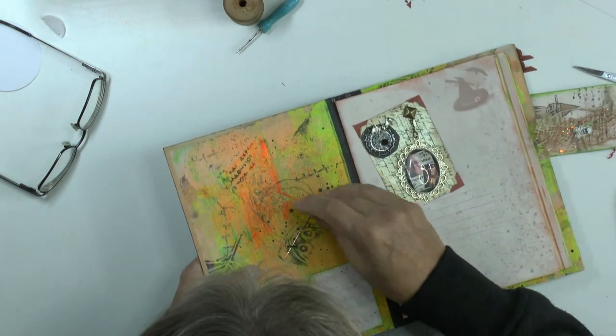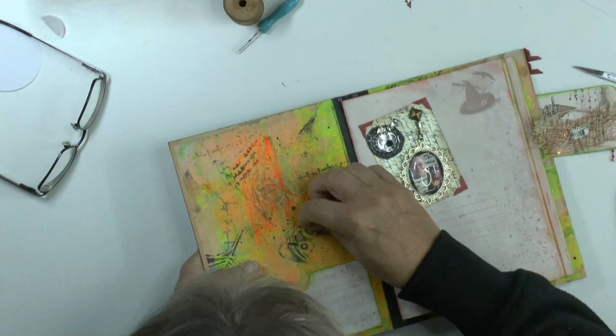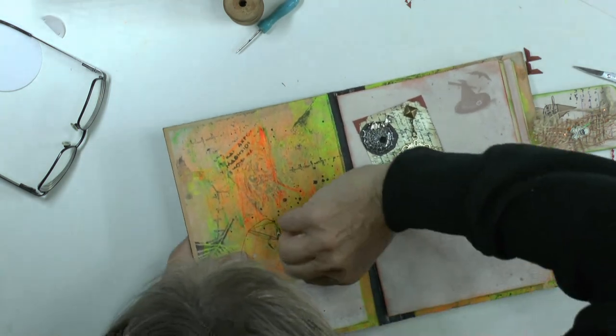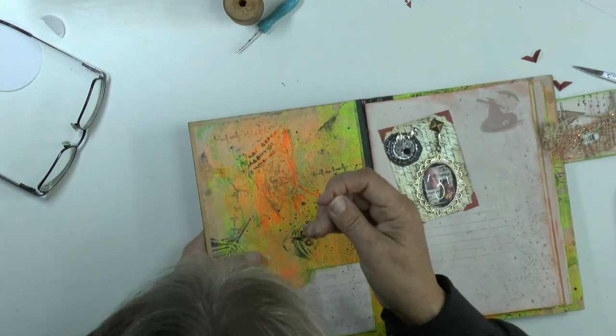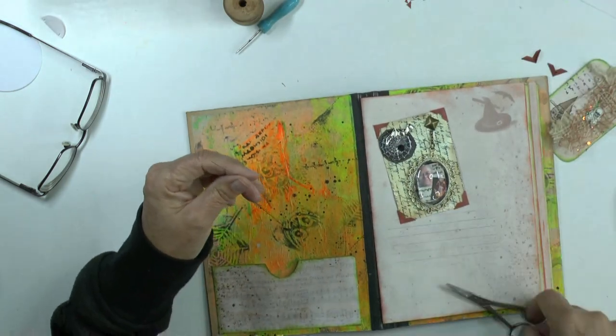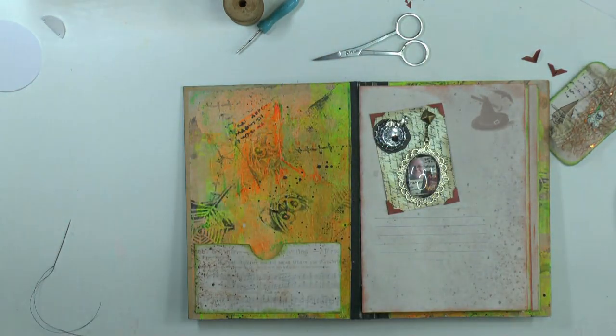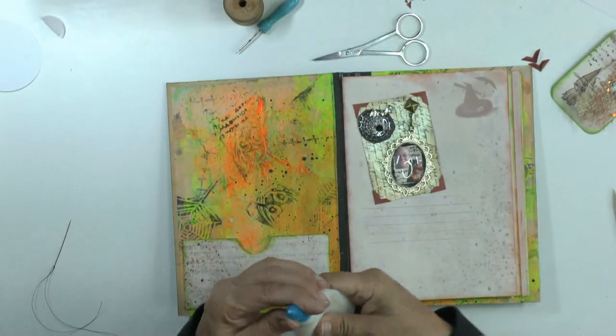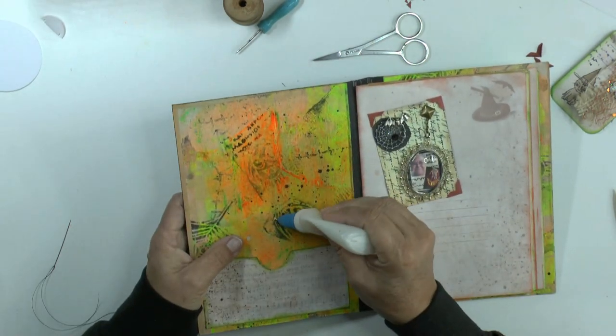I will tie a knot in it. And another knot. And another knot. Put some glue on it. She won't fall off again. Put my glasses on again. Glue. Where is the glue? There is the glue.